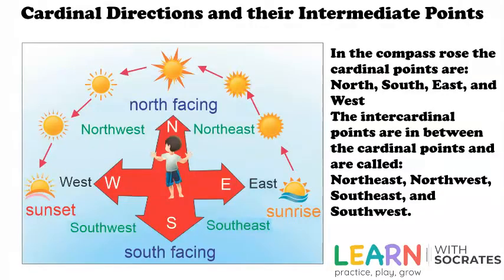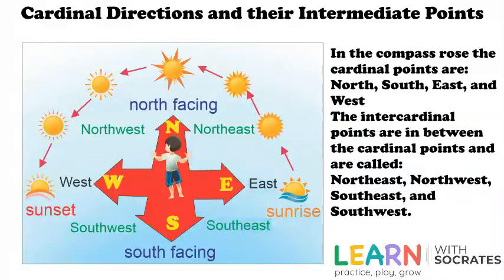Cardinal directions and their intermediate points. In the compass rose, the cardinal points are north, south, east, and west.